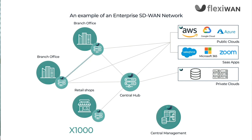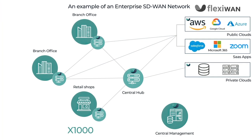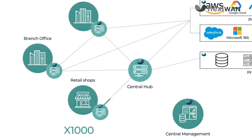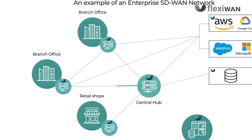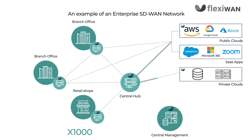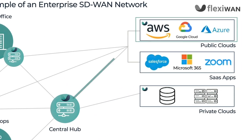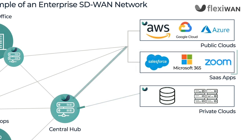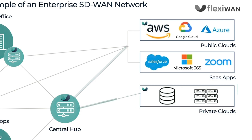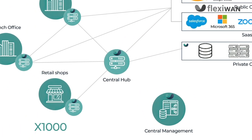It also gives you direct connectivity from the branch office to some cloud services, but the retail shops are all connected through a hub — maybe more than one hub — and the hubs are connected to the branch offices and to various services in the cloud. This can be public clouds, specific applications like Salesforce and Microsoft, or a private cloud of that enterprise.